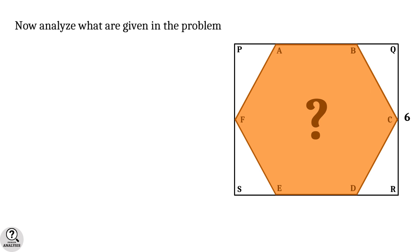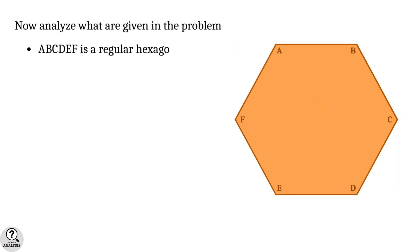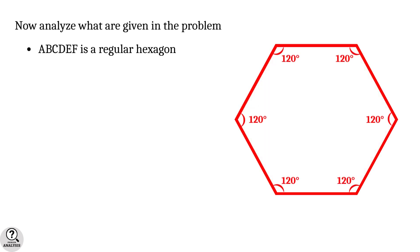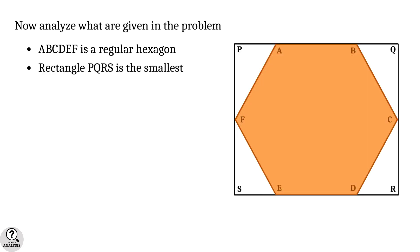Now let's analyze the problem. First of all, ABCDEF is a regular hexagon, that is all the sides are equal and all the angles are 120 degrees. Secondly, the rectangle PQRS is the smallest rectangle that contains the hexagon.